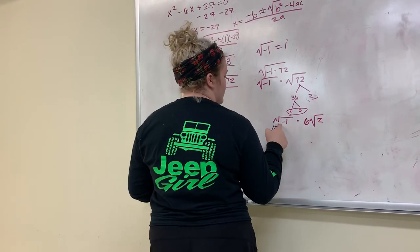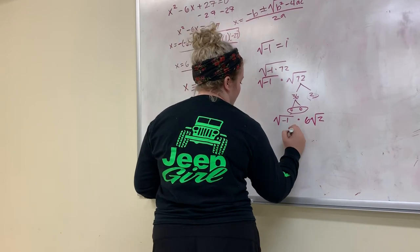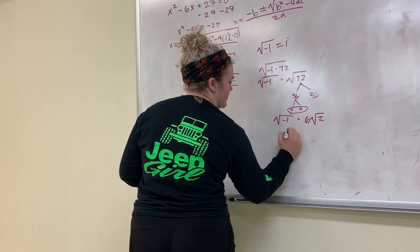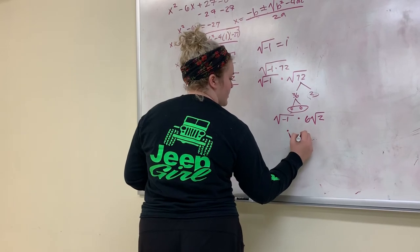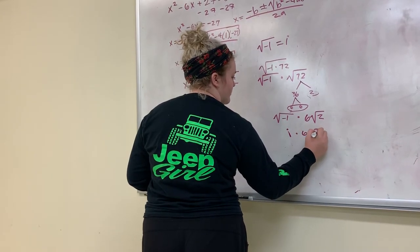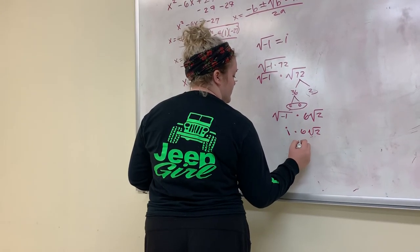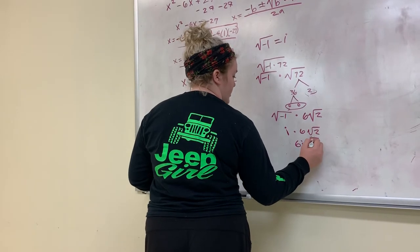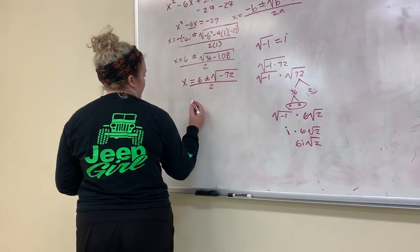Now knowing that square root of negative 1 just equals i, we will be doing i times 6 square root of 2, which just equals 6i square root of 2. So now that we have that, we go back over here.